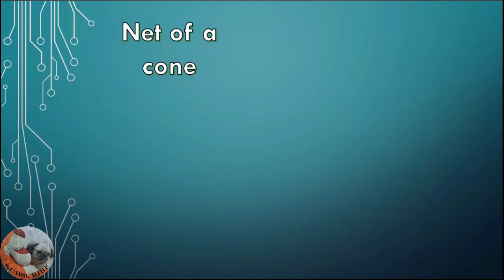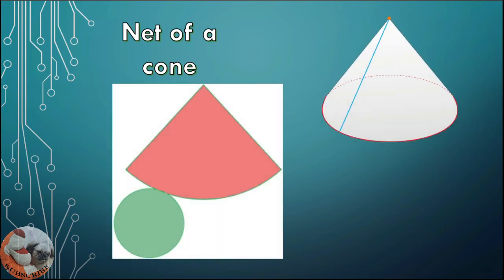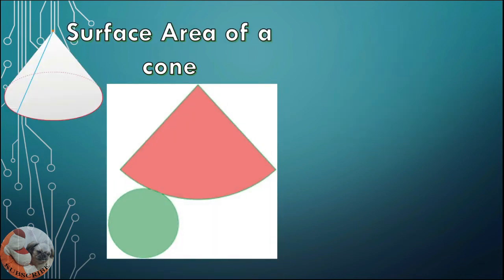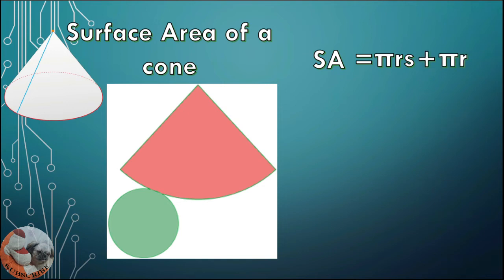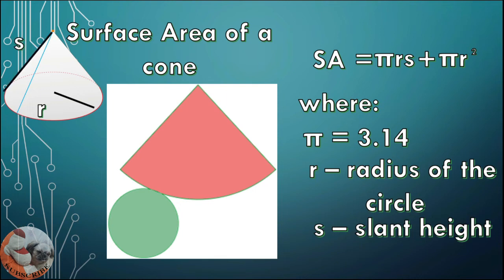This is the net of a cone. To find the surface area of a cone: surface area equals πRS plus πR², where pi is constant at 3.14, R is the radius of the circle, and S is the slant height.